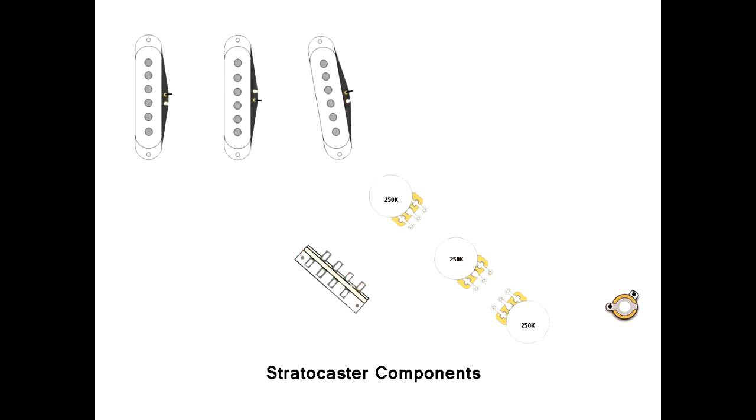So we're going to start off with our three pickups. We're going to have our five-way selector switch and we're going to have three 250K pots. One's going to be used for volume, two are going to be used for tone, we have our output jack. The one piece that we're going to add is our switch. You can use a toggle switch, you can use a push-pull,